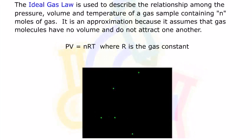The Ideal Gas Law is used to describe the relationship among the pressure, volume, and temperature of a gas sample containing n moles of gas. It's an approximation because it assumes that gas molecules have no volume and do not attract one another.